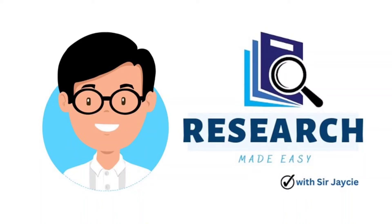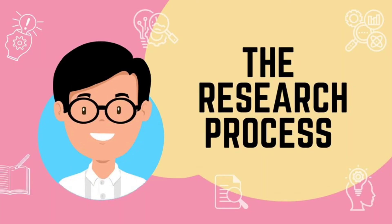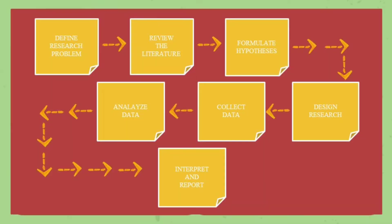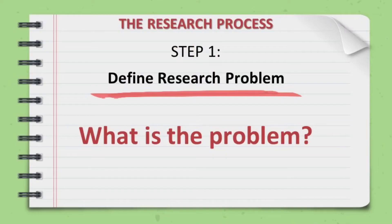Hello everyone, I'm Sir JC and you are watching Research Made Easy. For today's episode, we are about to discuss the research process. There are seven key stages in the research process. Let's discuss them one by one.